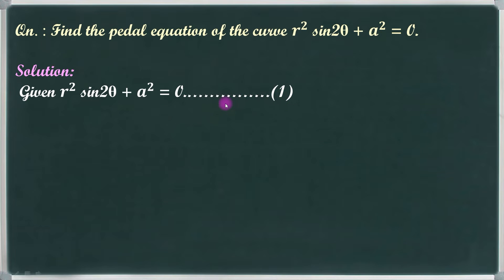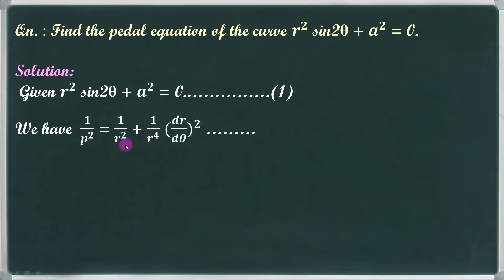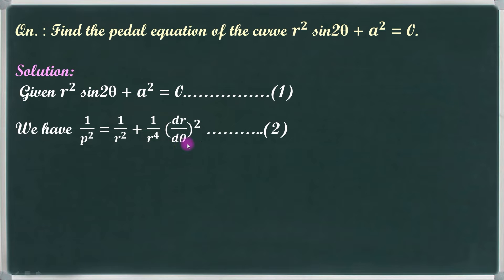So, just eliminate theta. To find the pedal equation, we use the formula involving dr by dθ. First, let's find dr by dθ from equation number 1.